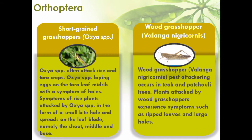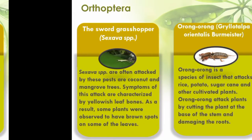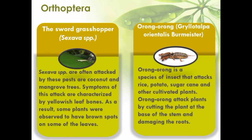Taro plants attacked by grasshoppers experience symptoms of sharpening on the leaf surface by nymphs, and hulling in the leaf midrib due to puncture by the female imago's ovipositor for egg-laying. The next Orthoptera pest is the wood grasshopper, Valanga nigricornis. Wood grasshoppers are pests that attack thick vegetation and petai trees, causing symptoms of torn leaves and enlarged holes.